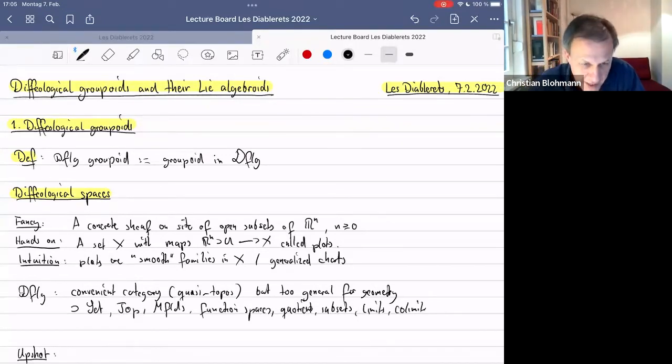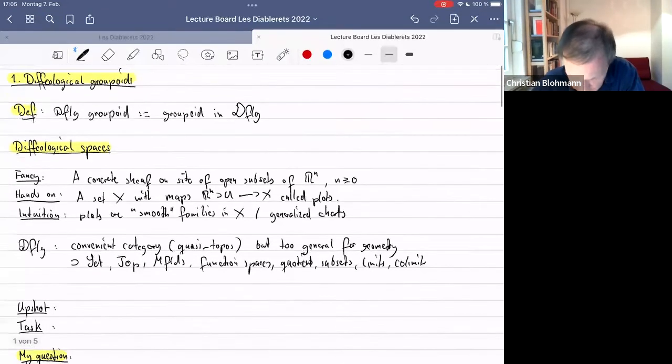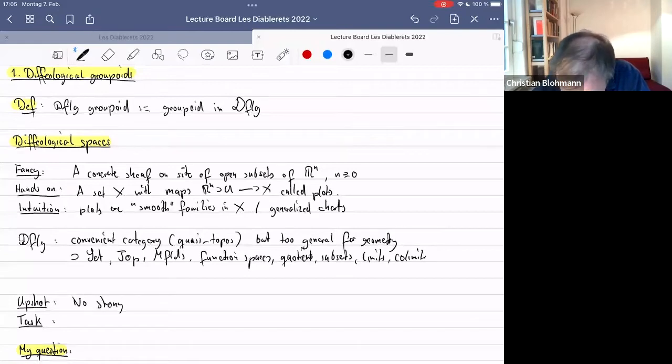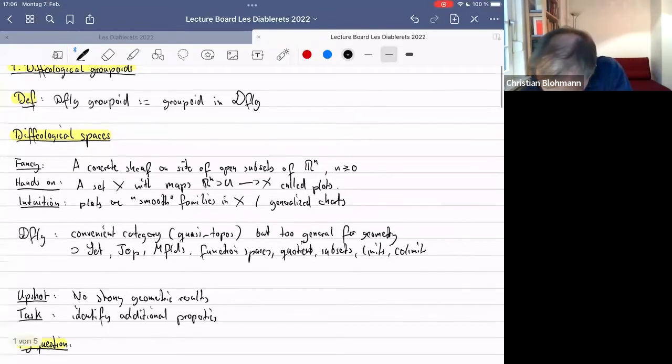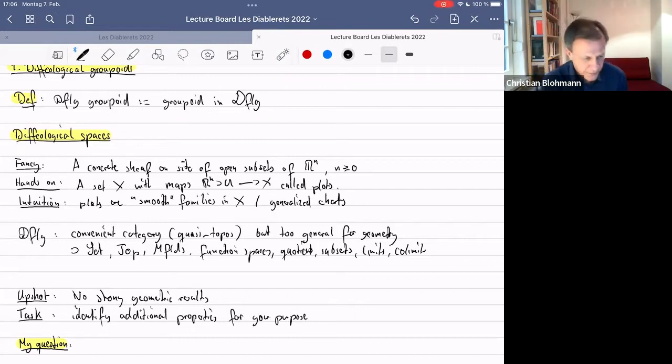And clearly there can't be any good geometric results for such a vast class of objects. So there are no strong geometric... It's an ambient category that's nice to place everything into and then you go from there. So the task when working with diffeological spaces is typically that you have to identify additional properties to get what you need for your purpose. Things you want to require of spaces to do what you want to do with them. And depending on the purpose you have in mind, this may be very different.